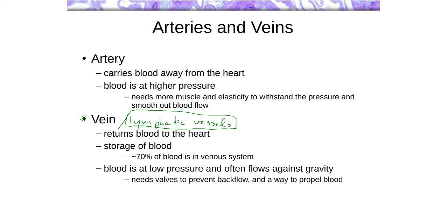One of the things you will notice when looking at slides of arteries and veins is that arteries, because of the thickness of the muscle within their walls, tend to remain open. When you are looking at arteries under the microscope, what you tend to see is a round sort of structure with a fairly thick wall. That wall is going to be fairly eosinophilic, because you are going to have a lot of smooth muscle around the outside of the lumen.